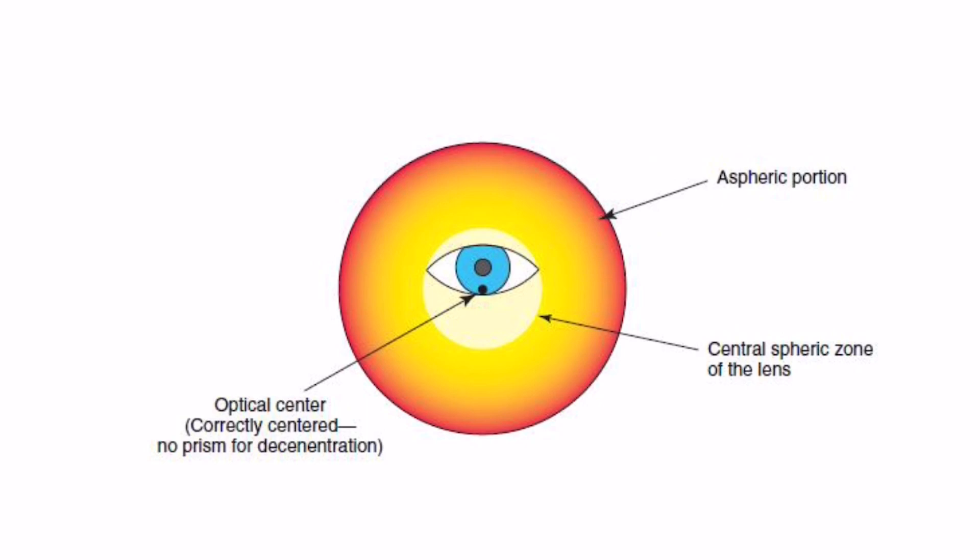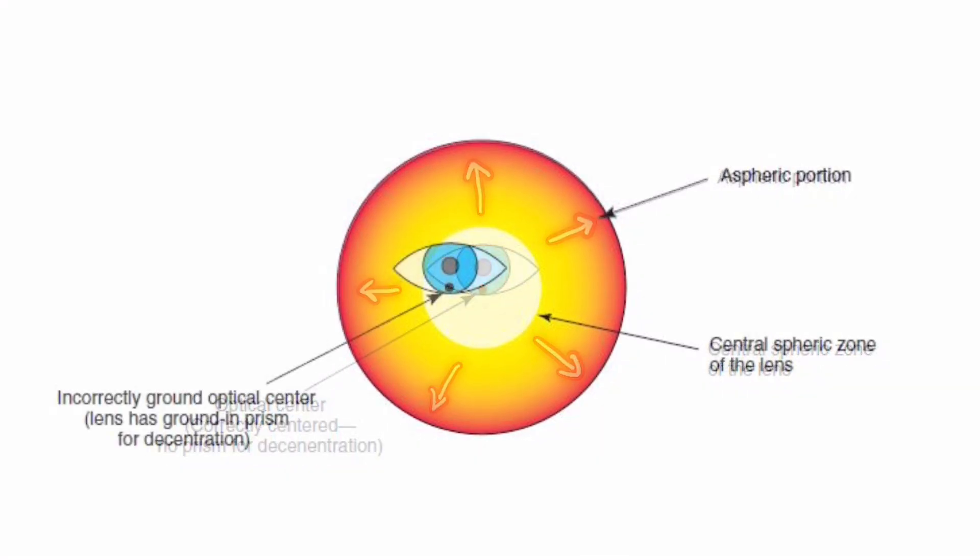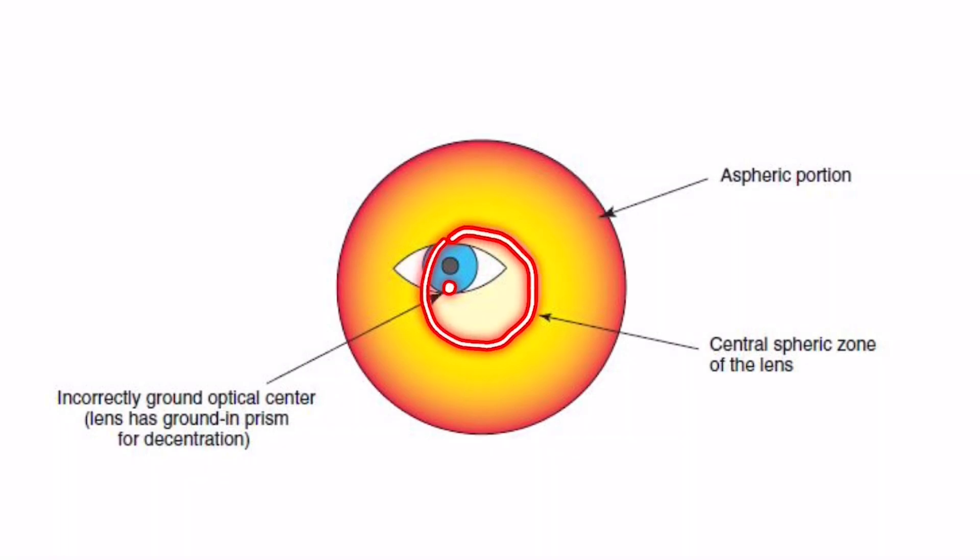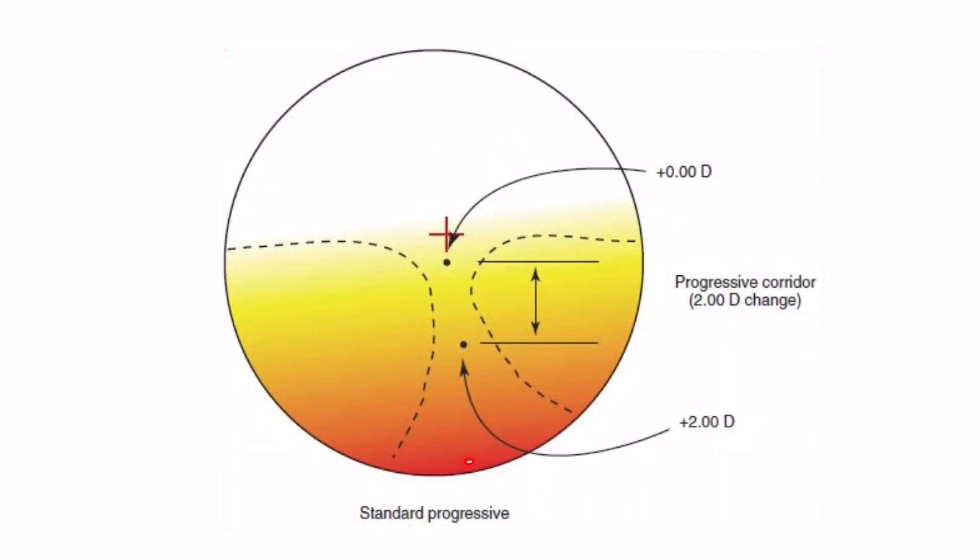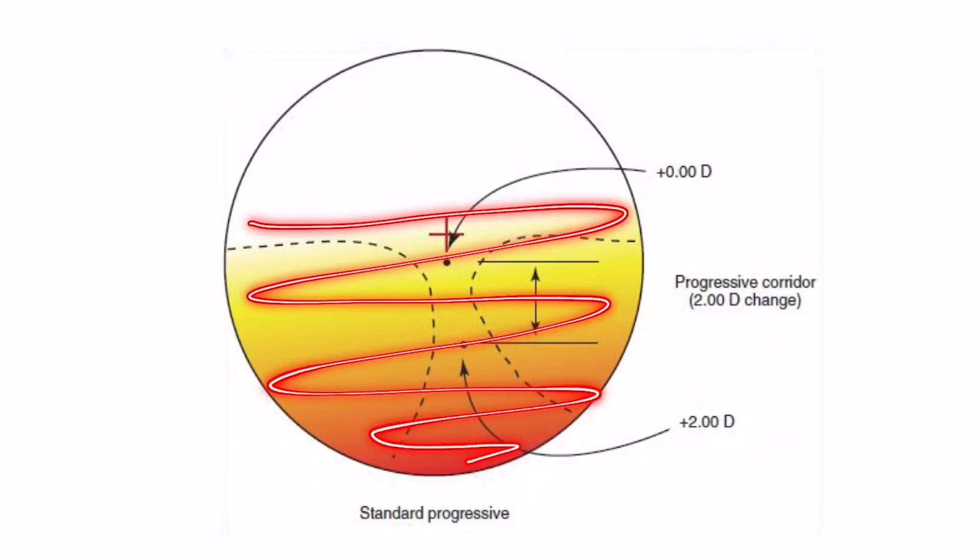Due to the nature of aspheric surfaces, the wearer's eye needs to be positioned at the blank geometric center in order for the asphericity to work as designed. So prism for decentration is not possible on any aspheric front surface lens designs. This includes single vision segments and progressives.